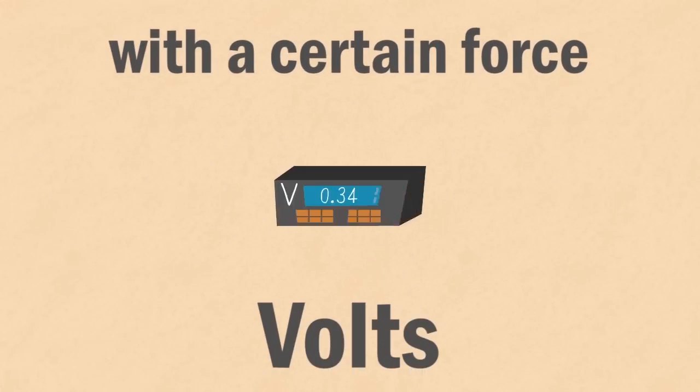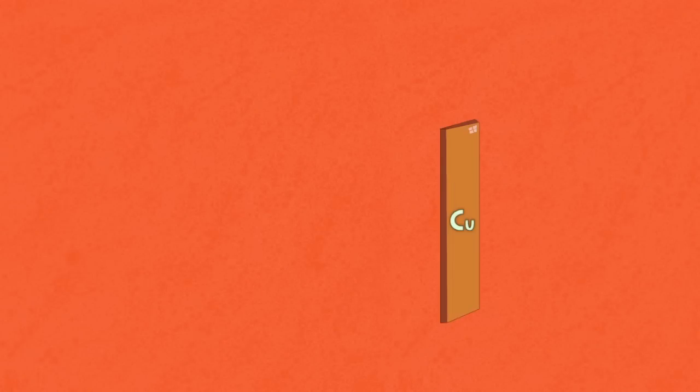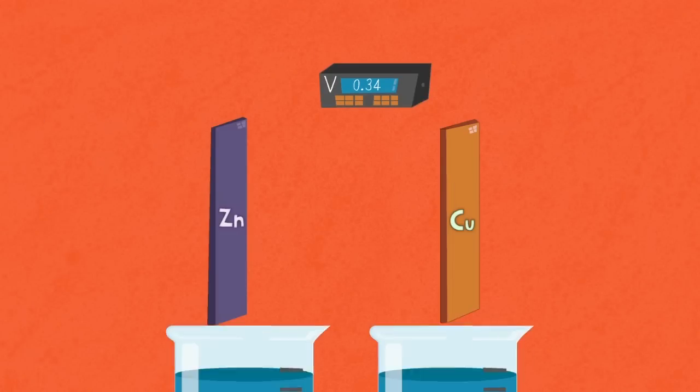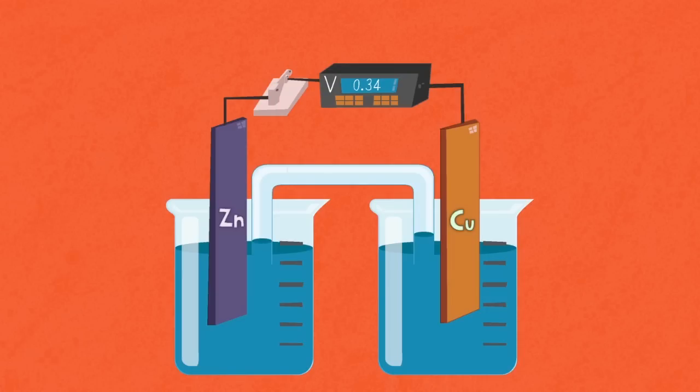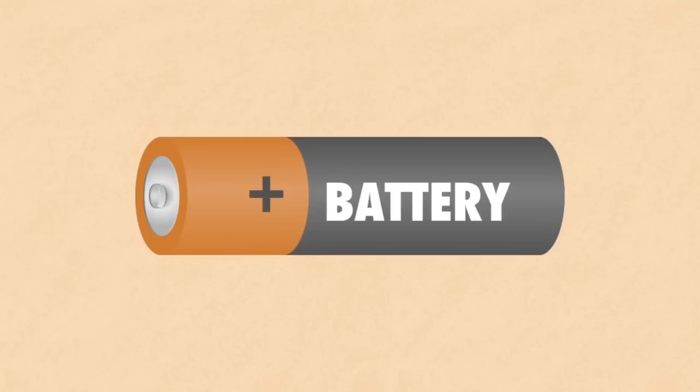When a metal gives away its electrons they do so with a certain force. This force you measure in volts using a voltmeter. If you connect a strip of copper and a strip of zinc metal to a voltmeter in a solution of their ions and connect them by a salt bridge and a wire, you have made an electrochemical cell, also known as a battery. But technically a battery is a collection of cells connected together.